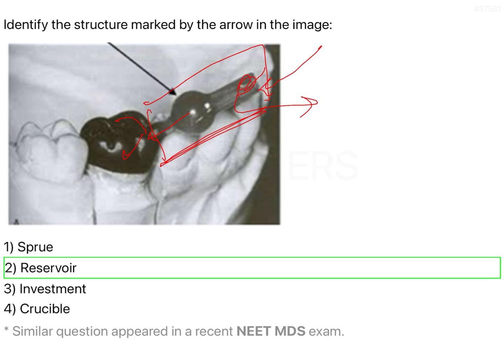The attachment apparatus, on the other hand, is what gets attached to your crucible or ring former. The crucible is attached to the centrifugal machine, and from there the molten alloy is passed in. So the attachment apparatus helps in connecting the reservoir and neck of the sprue former to your crucible. That is the function of your attachment apparatus.